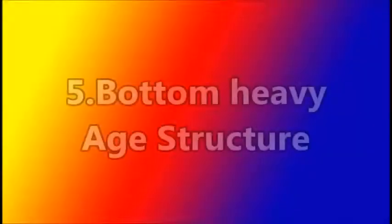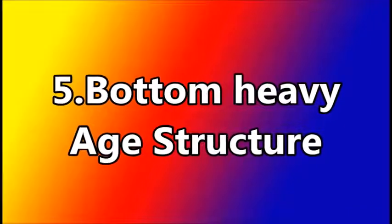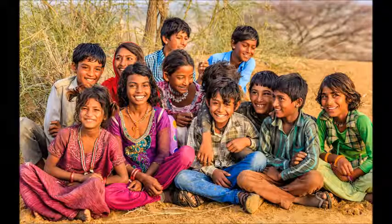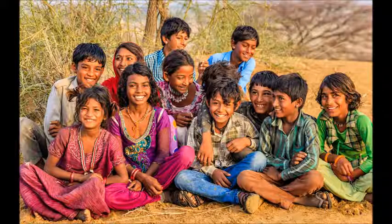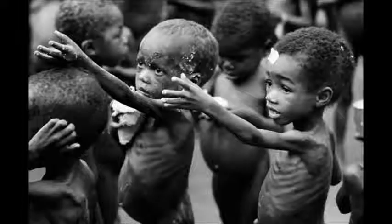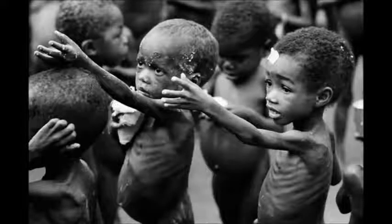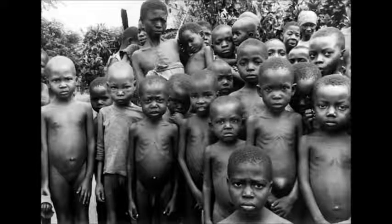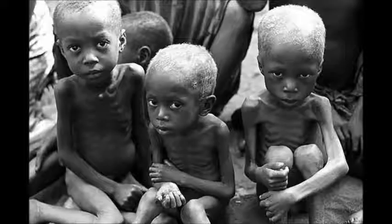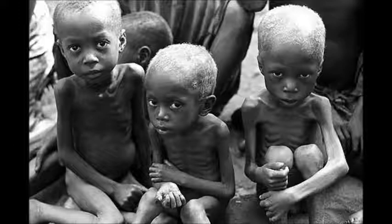The age composition of India's population is bottom-heavy, implying that the ratio of persons in age group 0 to 14 is relatively high. According to the 2011 census, children below 14 years comprised 30.7% of the population. This leads to a high dependency ratio, which can be reduced by slowing down the birth rate.